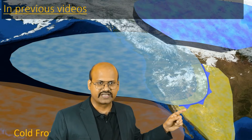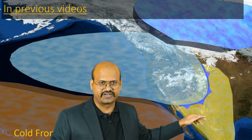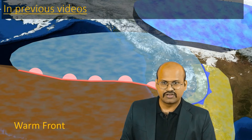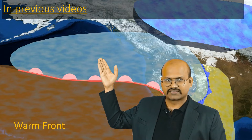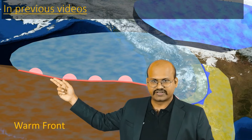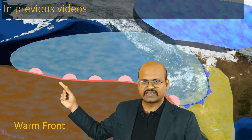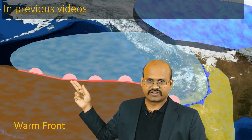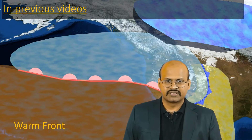We have also seen that when cold air mass tries to replace warm air mass it is called cold front, indicated by lines having triangles where triangles indicate the direction of movement. Similarly, when warm air mass replaces cold air mass it is called warm front, indicated by lines having semi-circles where the semi-circle indicates the direction of movement of the front.